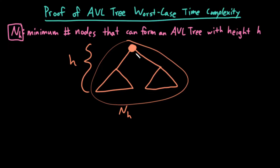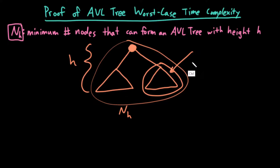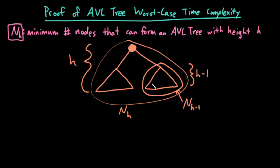So if this is an AVL tree, and the entire tree has height h, one of its two subtrees must have height h minus 1. The height of one of the subtrees — I just arbitrarily picked the right subtree — must be h minus 1, because h minus 1 height plus one edge to connect it to the root yields height h overall. Also, if I'm trying to minimize the total number of nodes, that subtree must have n sub h minus 1 nodes within it. So by the property of an AVL tree, the root can only have a balance factor of negative 1, 0, or 1.